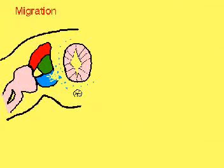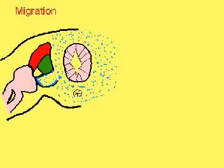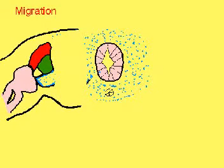Sclerotome forms the cartilage that forms the bone of the vertebral column.